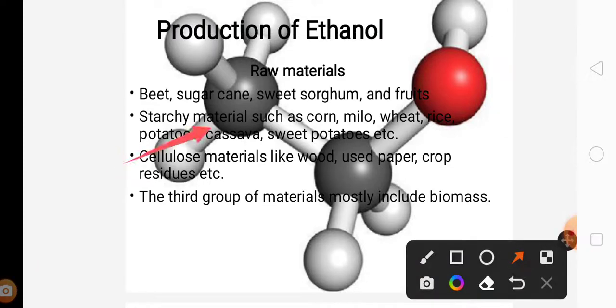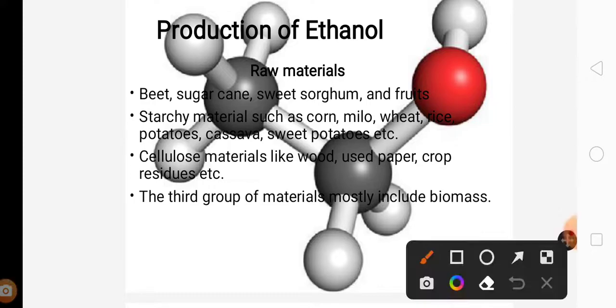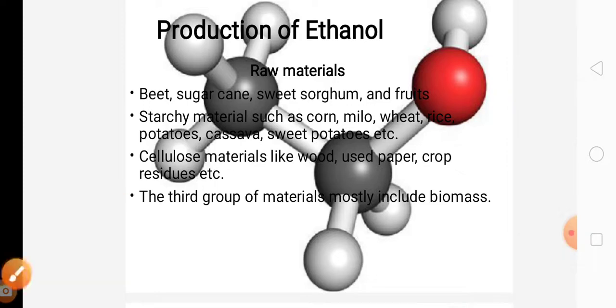In cellulose materials, wood, used paper, and crop residues like from wheat fields when the wheat has been plucked out, the waste that comes out can be used as a raw material for the production of ethanol. The third widely used group of material includes biomass like dung, cow manure, and vegetable waste. As they are eco-friendly, biodegradable, and not polluting the environment, this group is widely used as raw material for the production of ethanol.